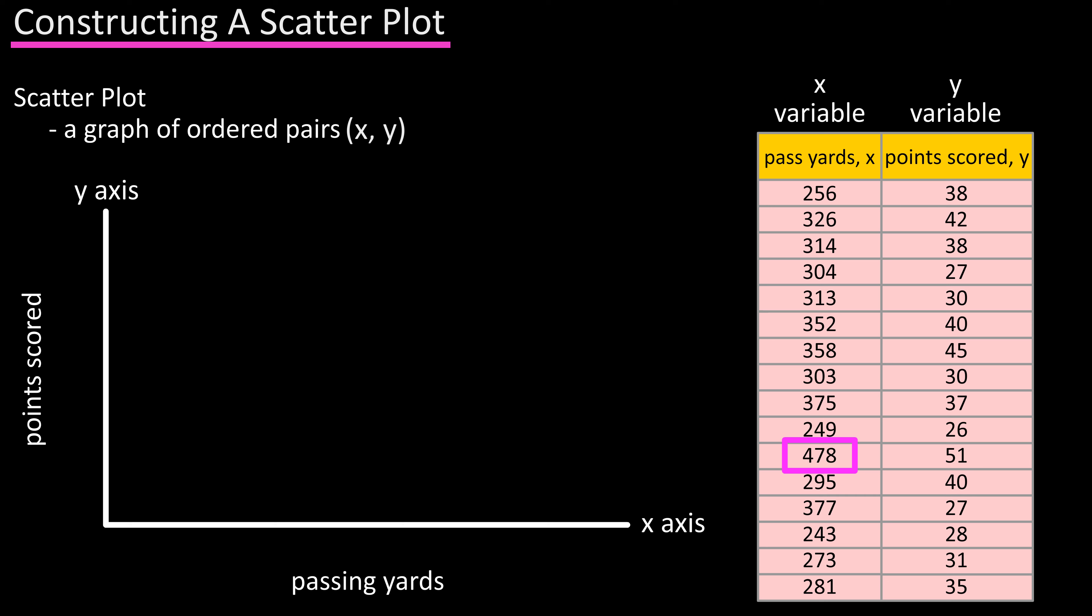We can round up to 500 and mark that somewhere near the end of the x-axis. Then make four more marks of equal distances going down the x-axis, marking them 400, 300, and on down to 100.